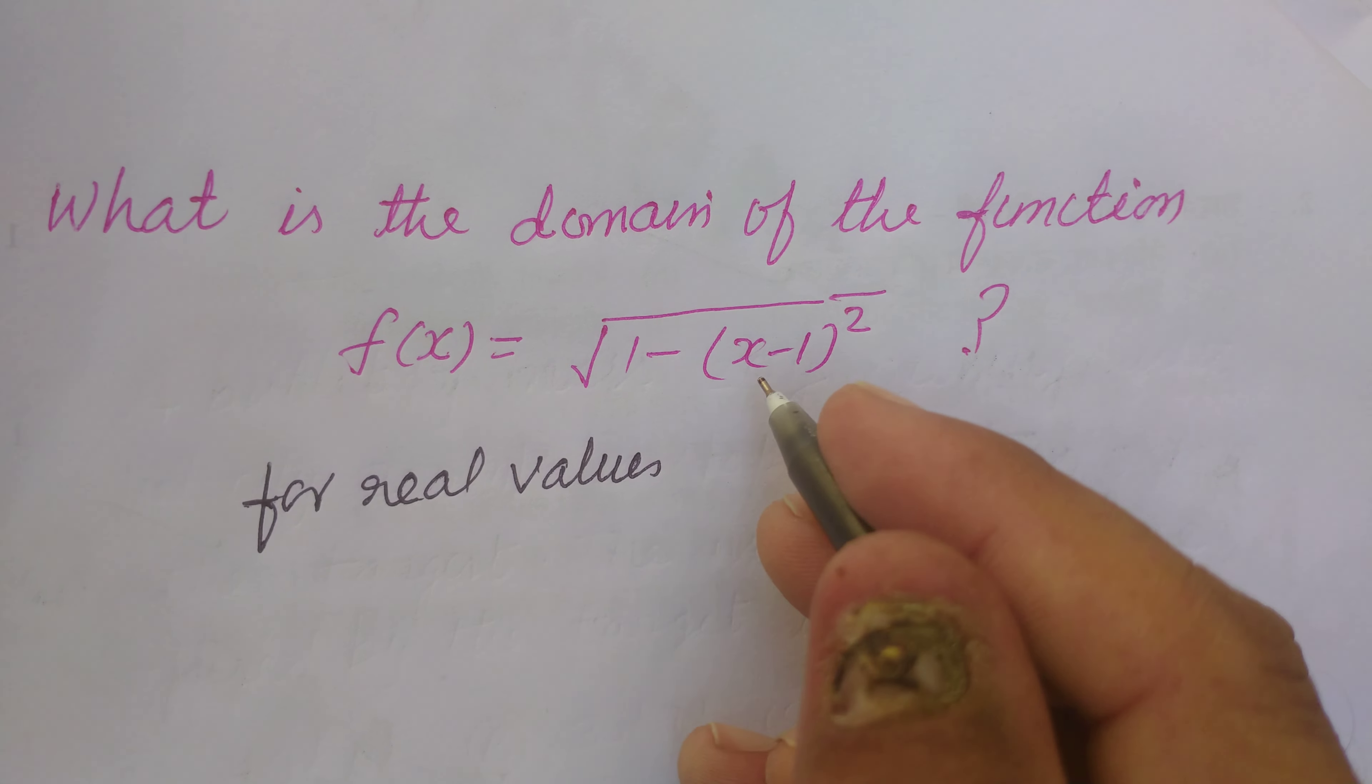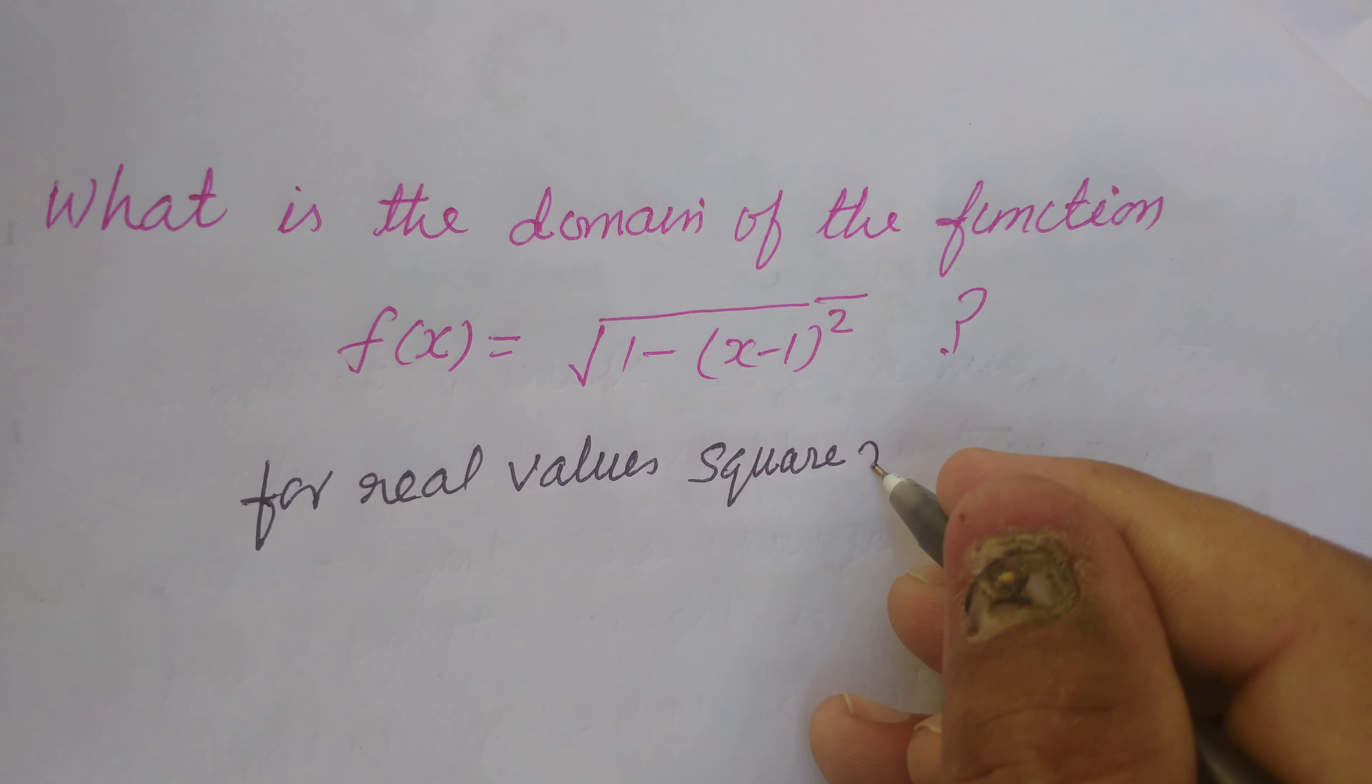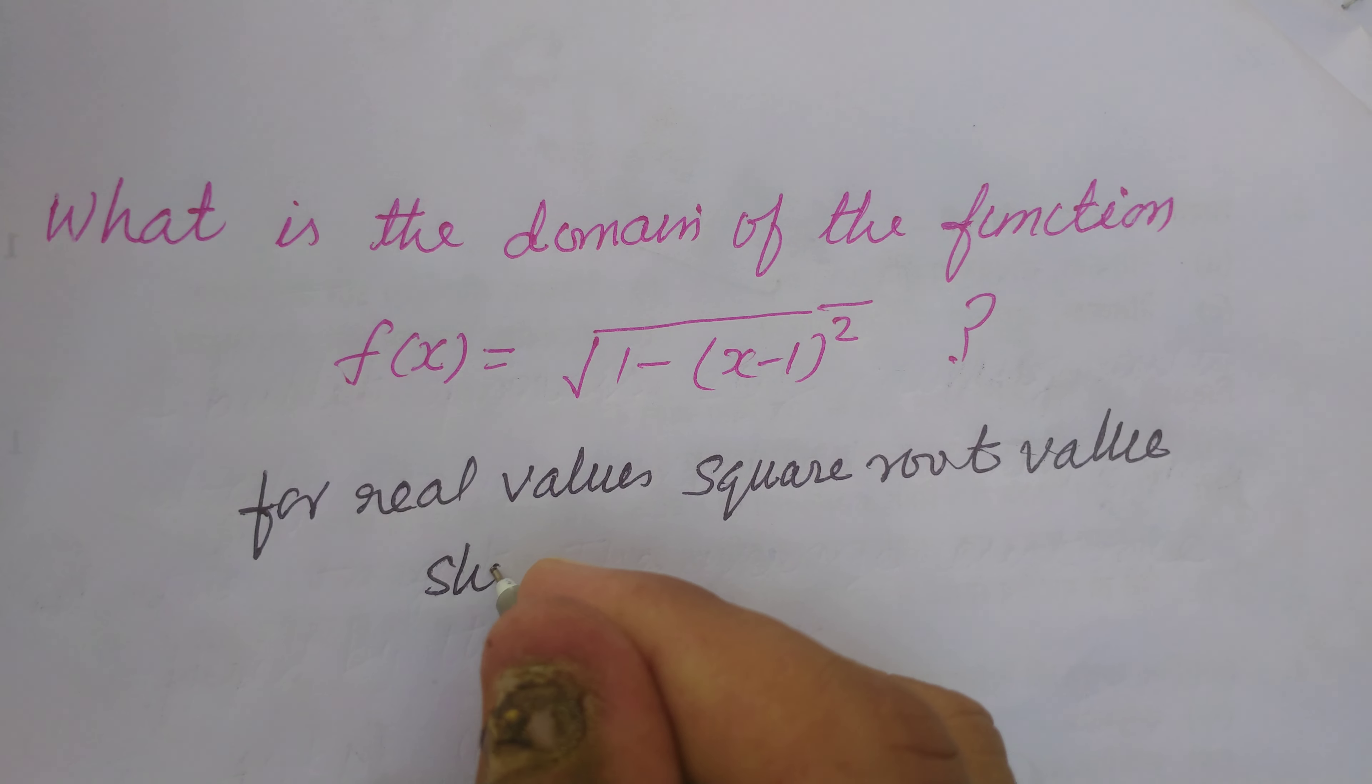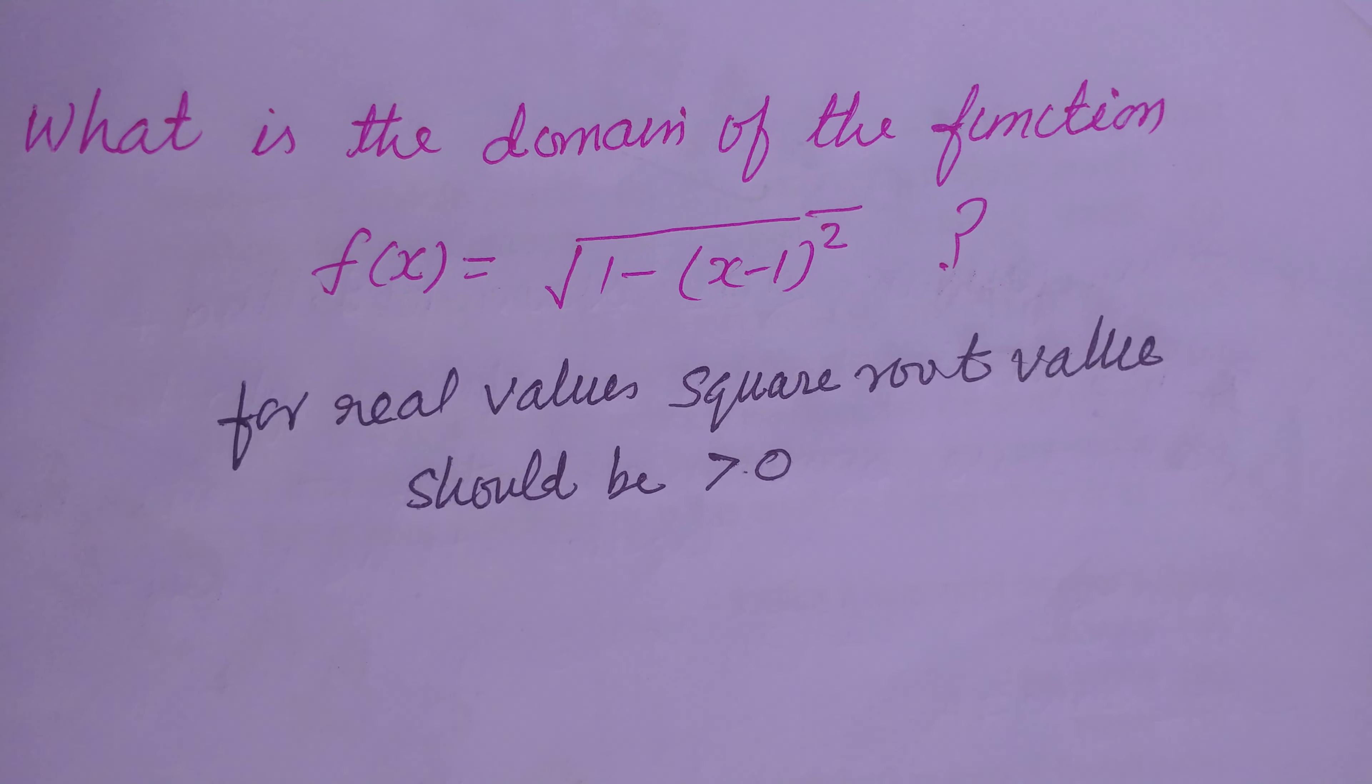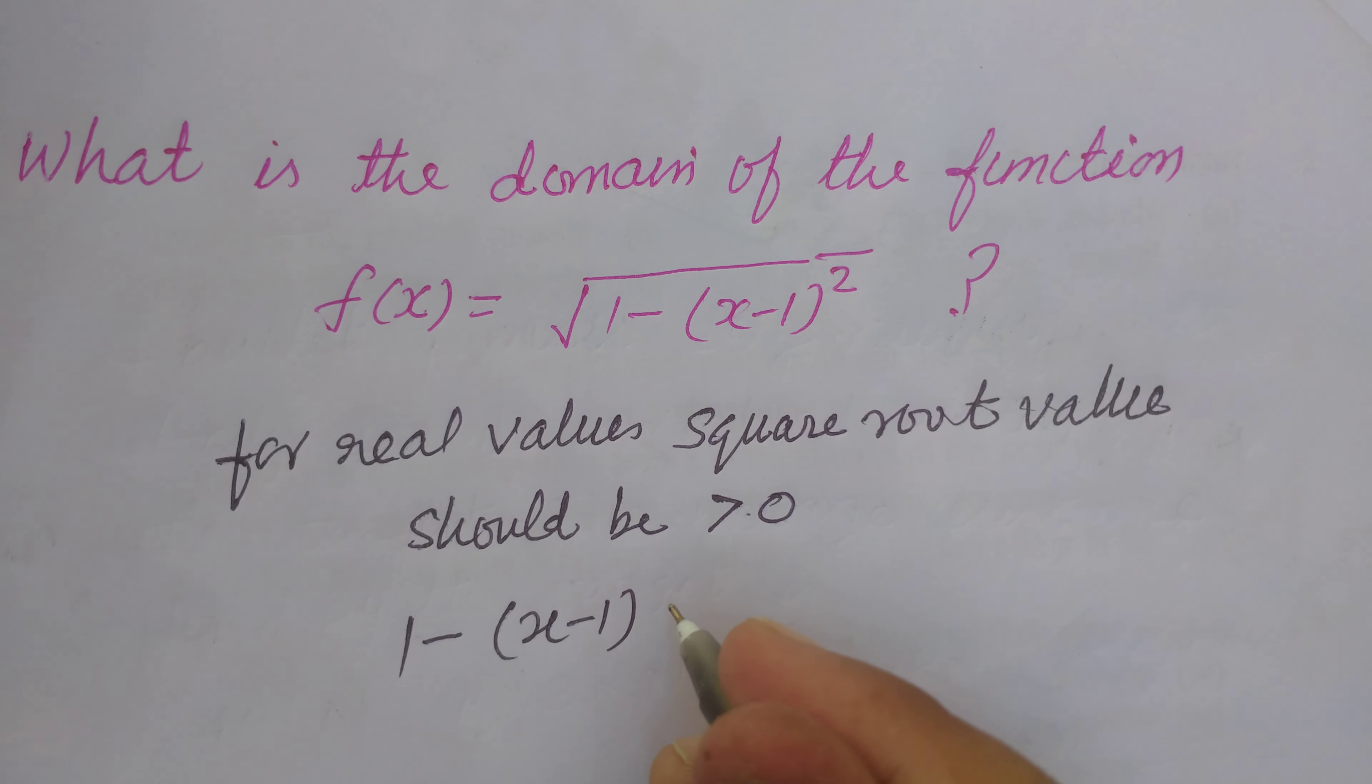The square root value should be greater than zero, so 1 - (x-1)² is greater than zero.